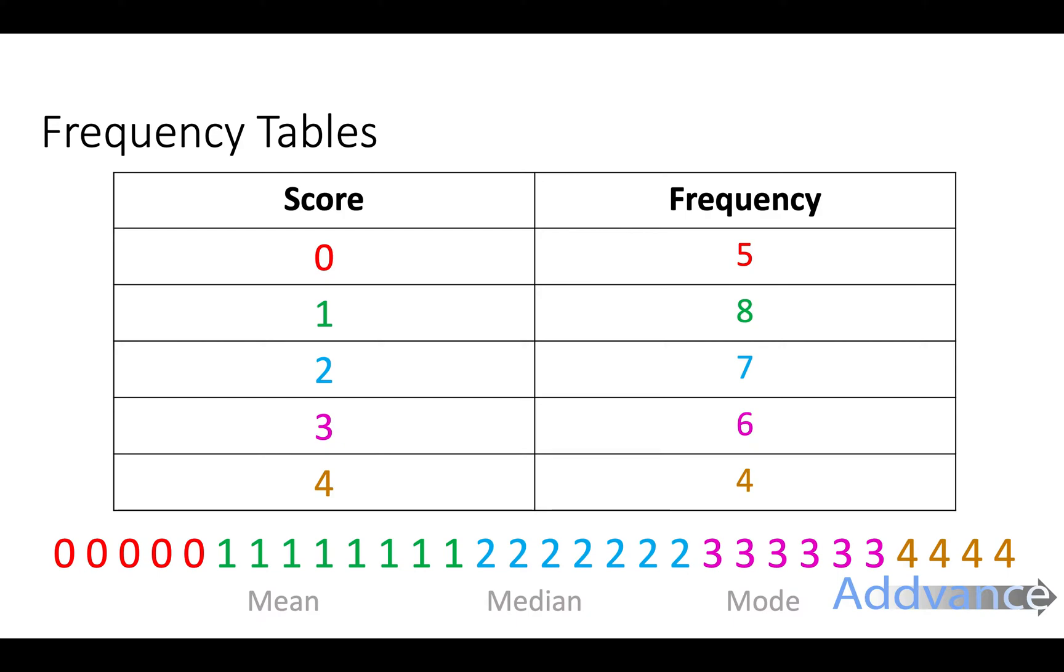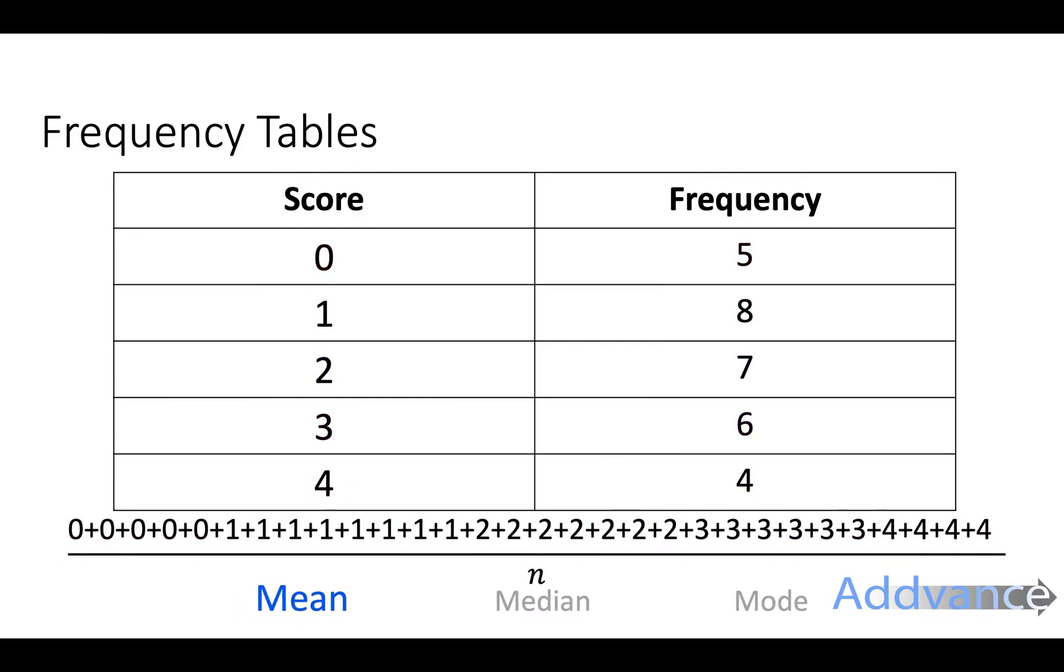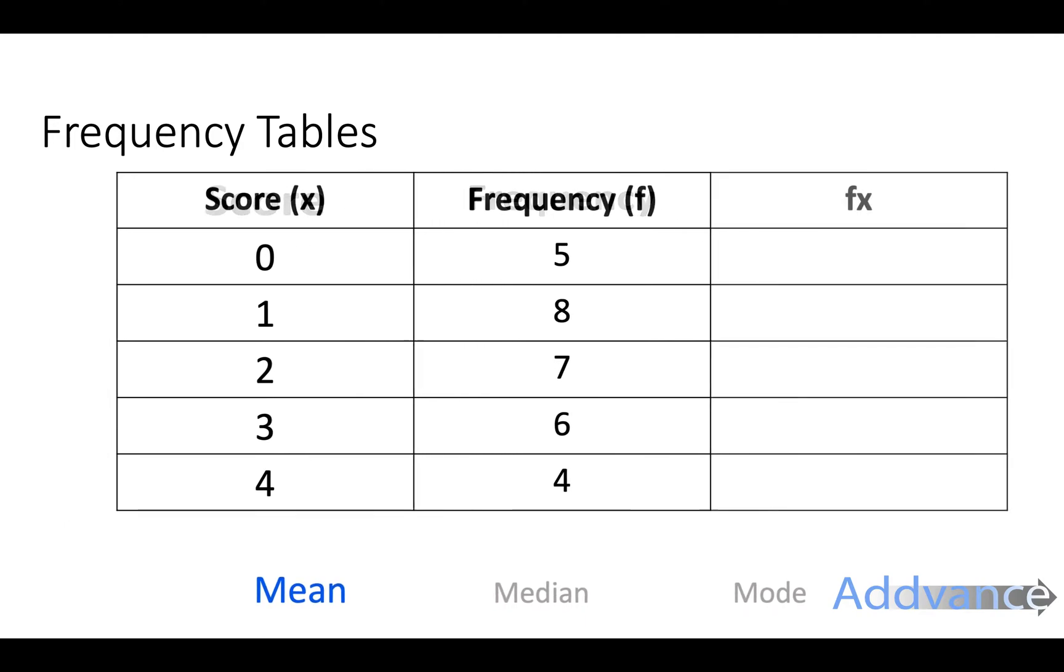If you ever get confused with frequency tables, it might help you just to write the data out as a list so you'll understand what's going on. Now we're going to work out the mean, median, and mode. To work out the mean, you normally add up the entire list of numbers and divide by the number of numbers. That's a big long list of numbers and it's going to take you a long time. There's a quicker way.